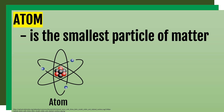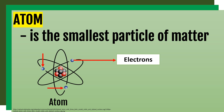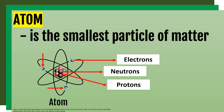Let us begin from the lowest and simplest level of biological organization: the atom. Atom is the smallest particle of matter. In a single atom, there are negatively charged particles called electrons. At the center is what we call the nucleus. The nucleus contains neutrons, which have no charge, and protons, which are the positively charged particles.